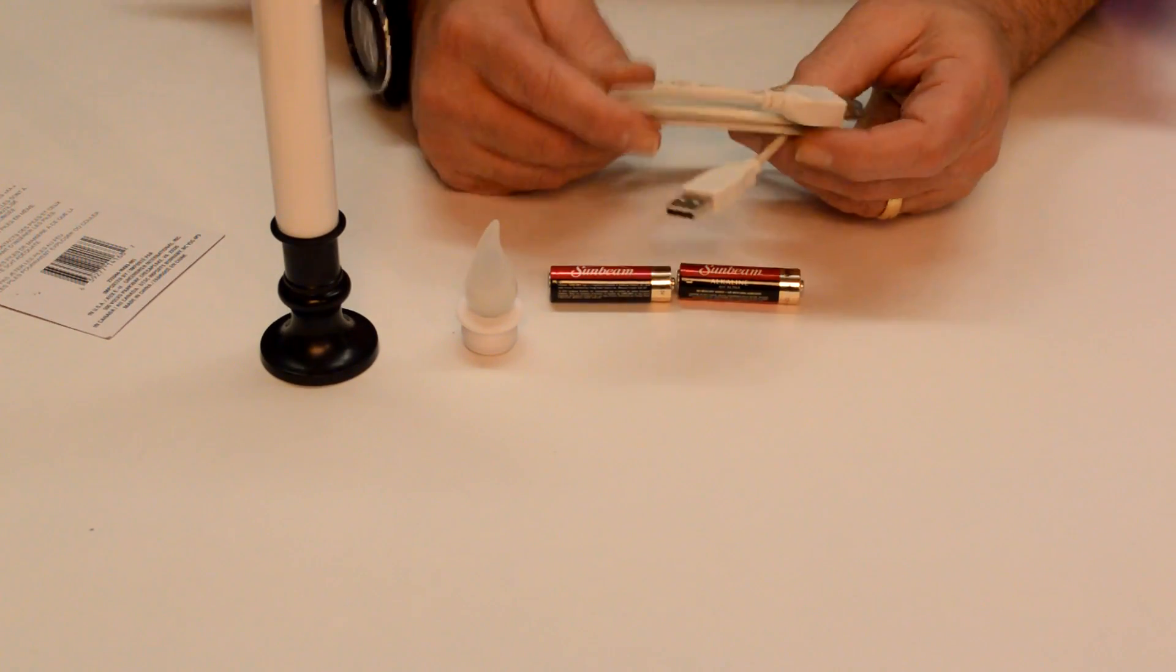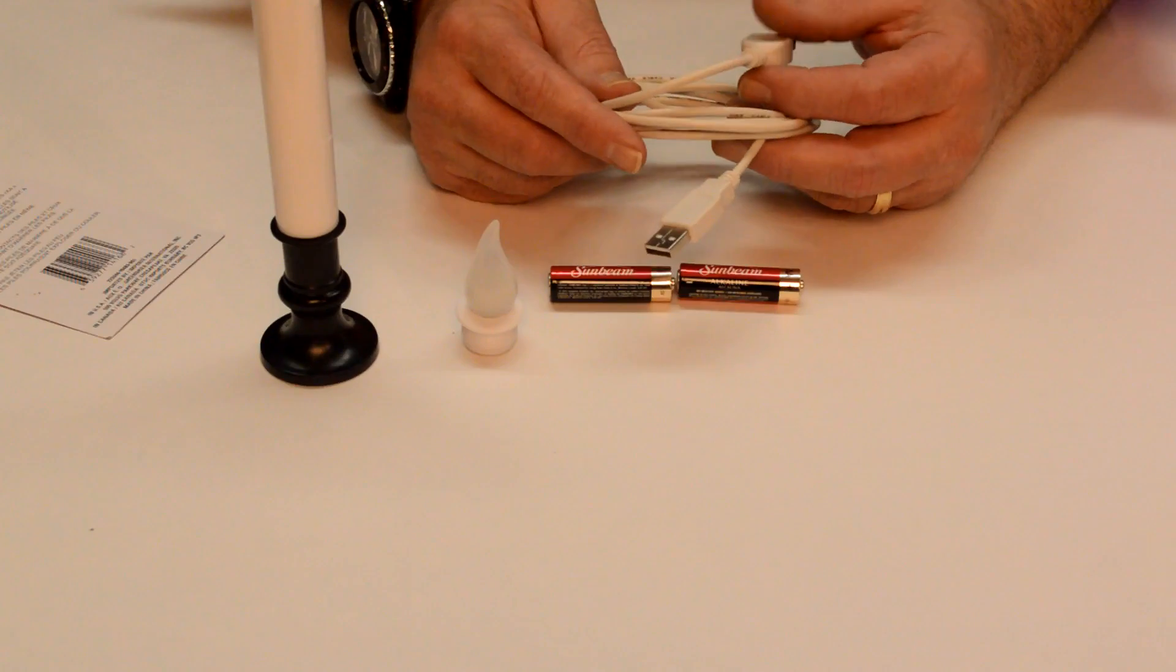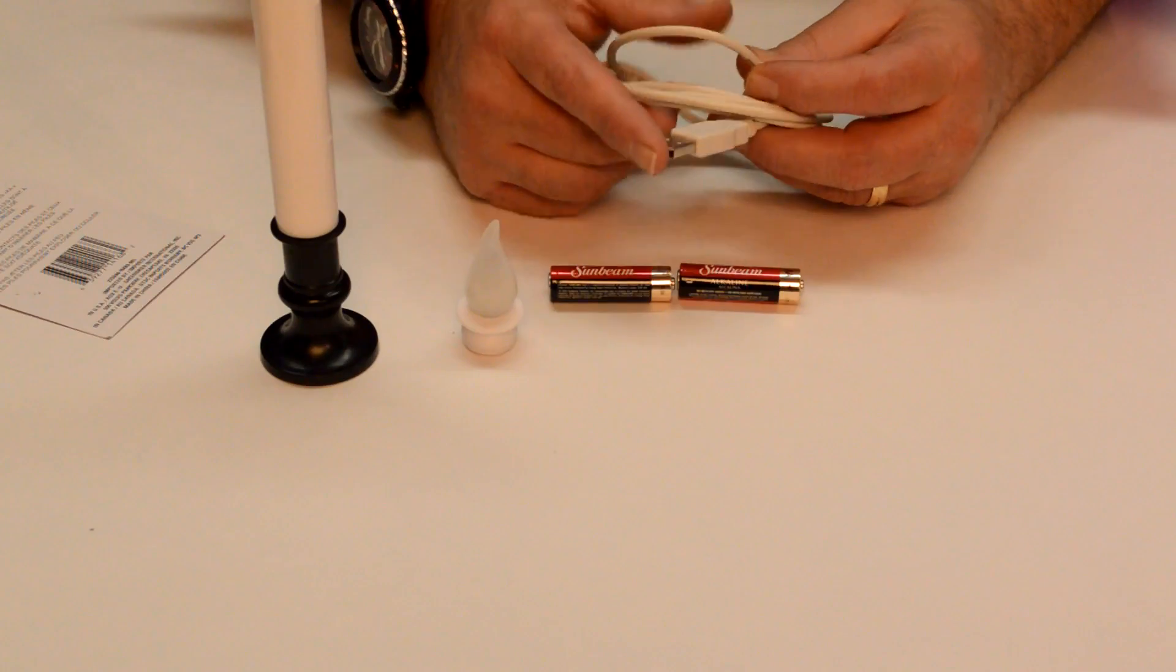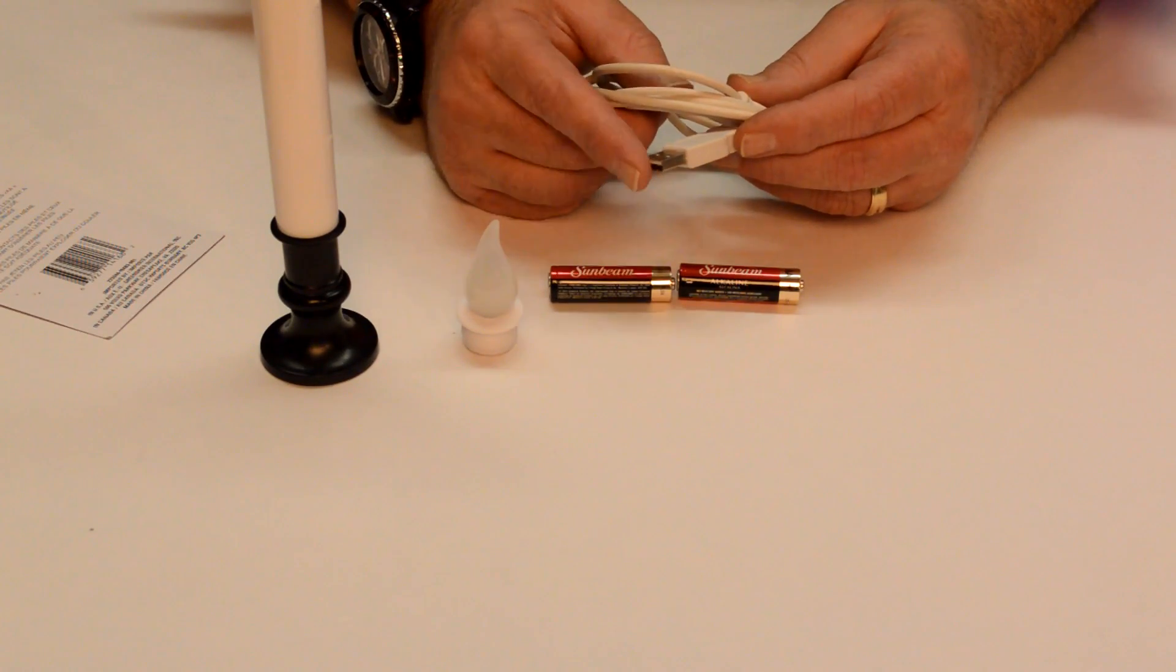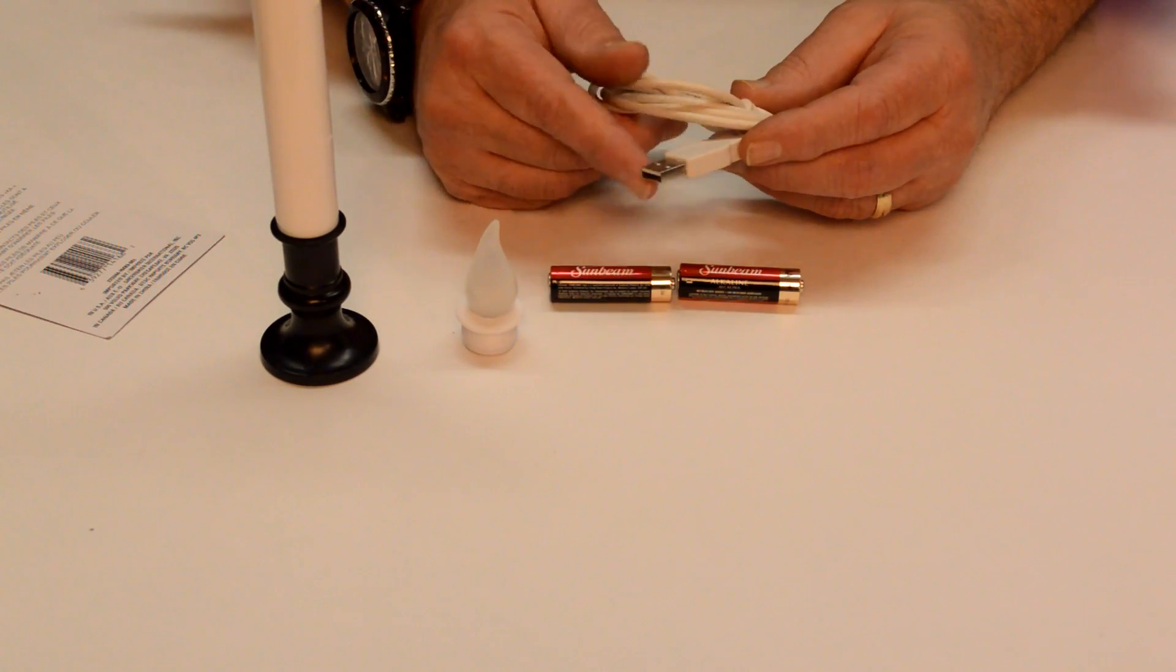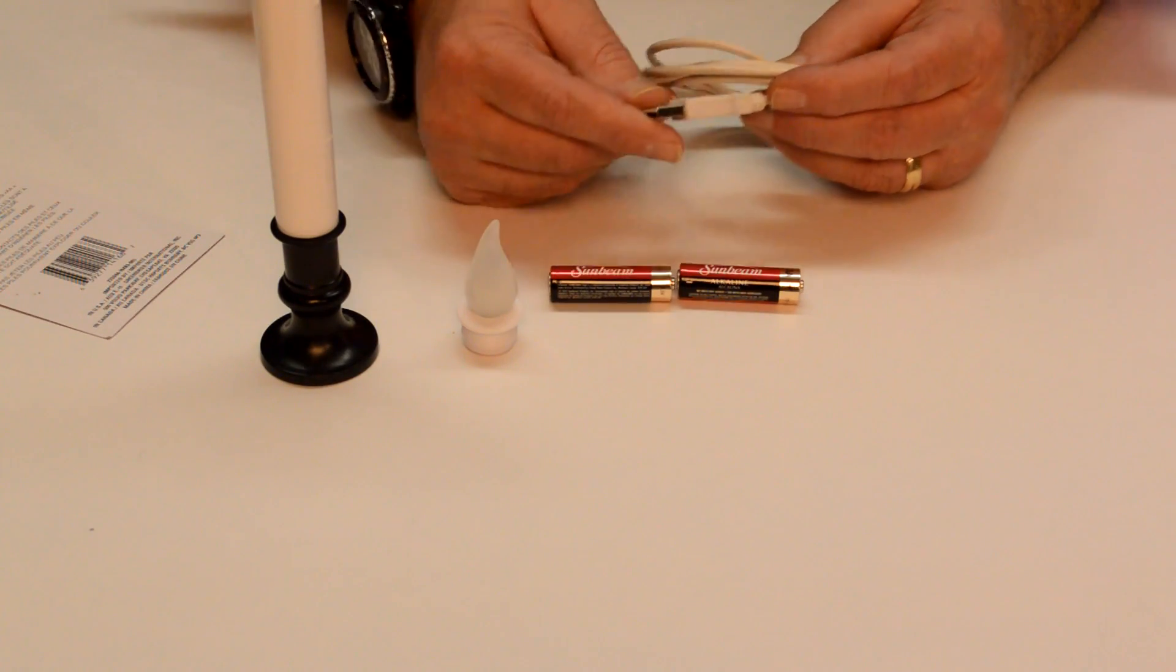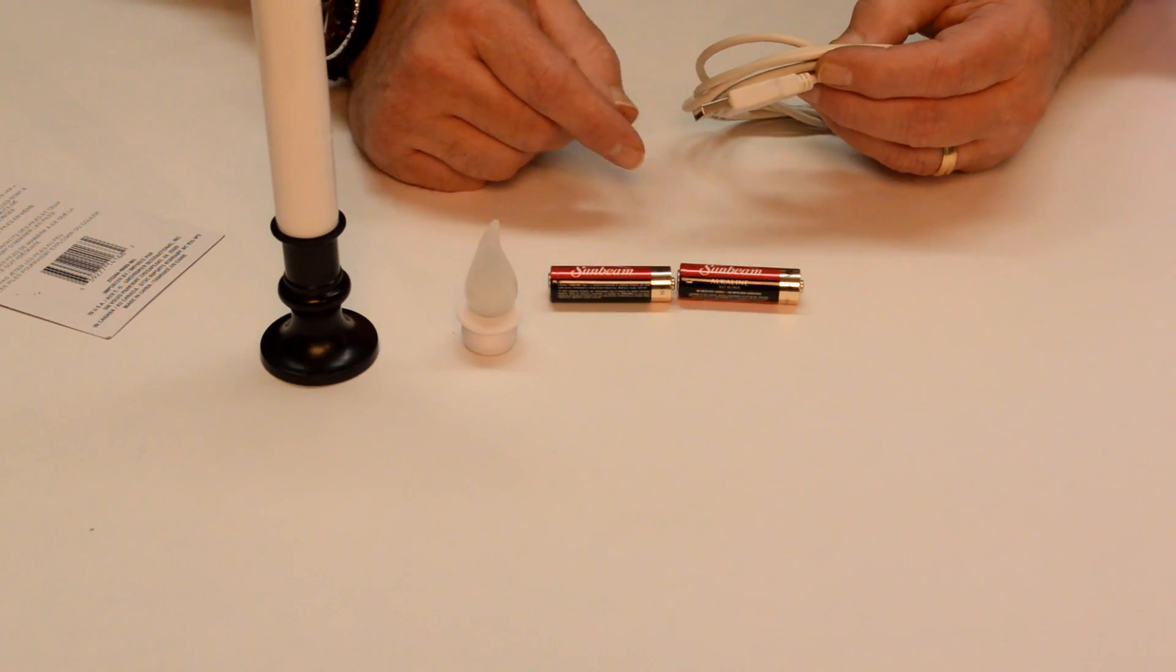So we know that we're going to be powering this from a USB on a computer or television and the standard for USB is five volts DC. So what we're going to have to do is convert this five volts USB to three volts to operate the candle.